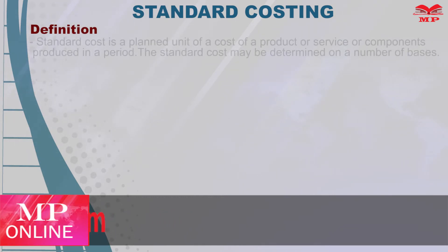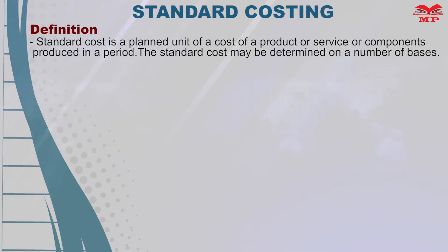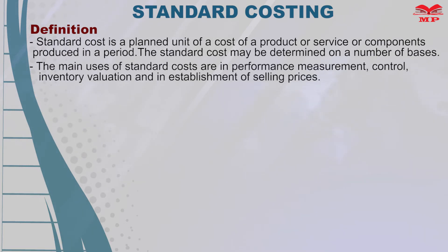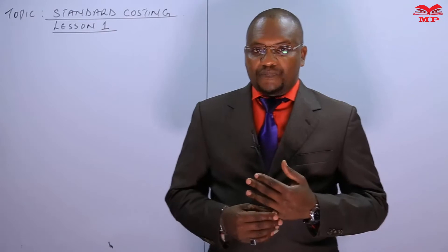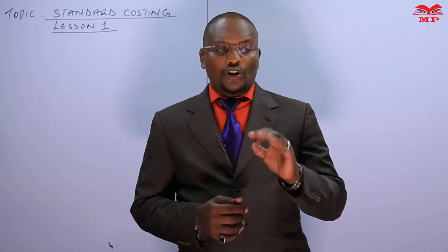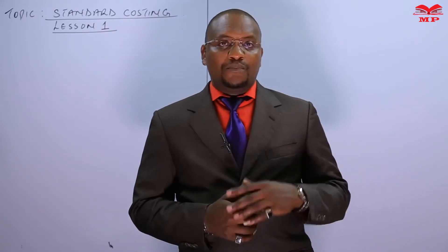Standard cost is a planned unit cost of a product, service, or components produced in a period. The standard cost may be determined on a number of bases. The main uses of standard cost are in performance measurements, control, inventory valuation, and in the establishment of selling prices.